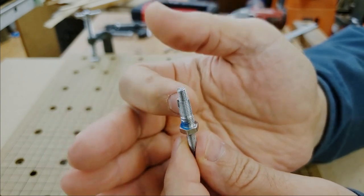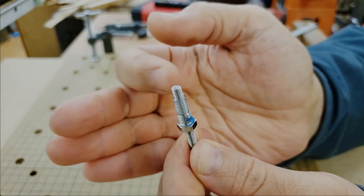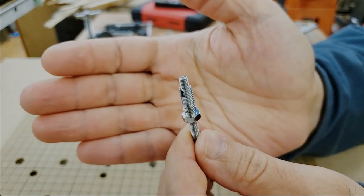So what I did is ground some of the threads and I'm waiting for my die to arrive to create a thread that is M6.